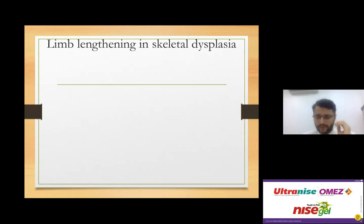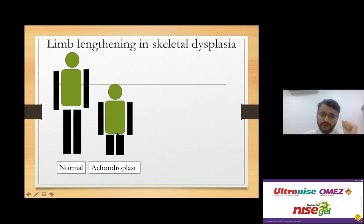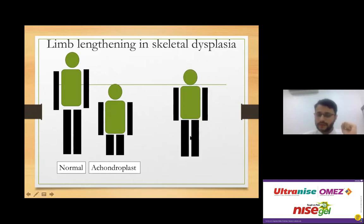In limb lengthening for skeletal dysplasia, a normal person has a normal upper-to-lower segment ratio. In an achondroplast, there is a significantly long upper segment with a very short lower segment. Limb lengthening is performed to decrease the disproportion between the upper and lower segments — we lengthen the lower segment. The child will always be slightly shorter than the normal population, but we convert a disproportionate dwarf into a proportionate short-statured person.